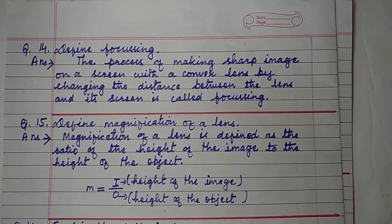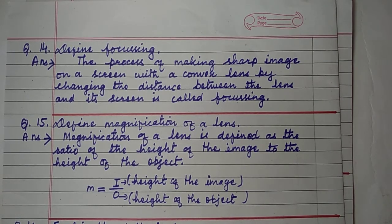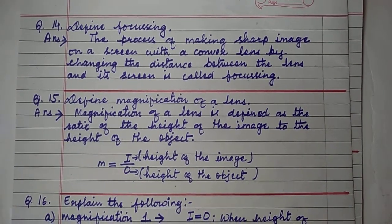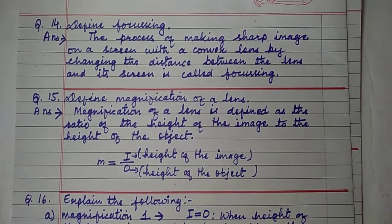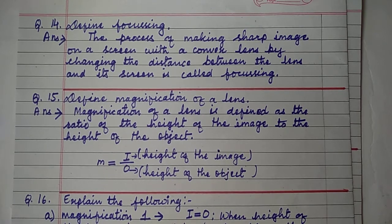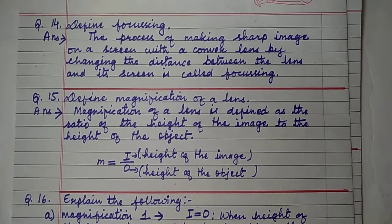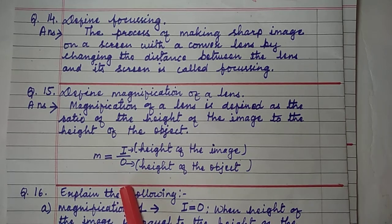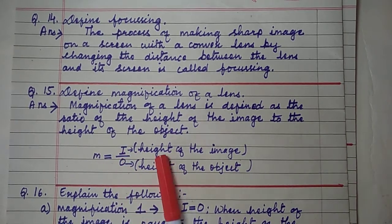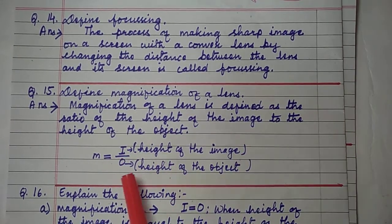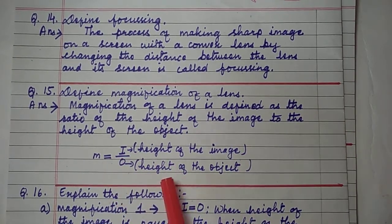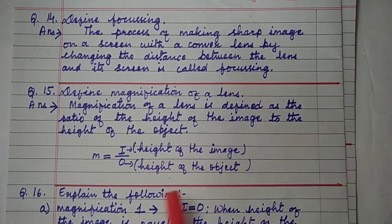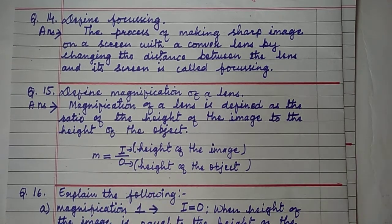Define magnification of a lens. Magnification of a lens is defined as the ratio of the height of the image to the height of the object. So magnification M equals I divided by O, where I is the height of the image and O is the height of the object.